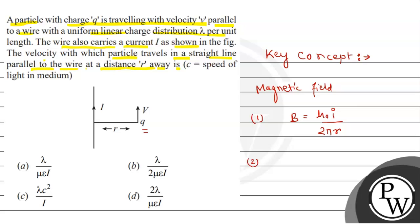And second is electric field. क्योंकि electric charge distribution per unit length कितना है, lambda है. तो therefore इसी के term में हम electric field को represent करेंगे. And that is equals to lambda upon 2 pi epsilon 0 r.